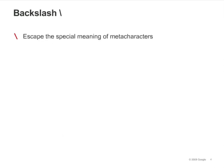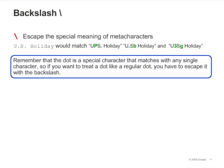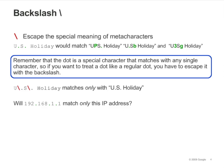Backslashes allow you to use special characters, such as the dot, as though they were literal characters. Enter the backslash immediately before each meta-character you would like to escape. "US Holiday", when written with dots after the U and the S, would match a number of unintended strings, including UPS.Holiday, U.SB.Holiday, and U3SG.Holiday. Remember that the dot is a special character that matches any single character, so if you want to treat a dot like a regular dot, you have to escape it with the backslash. You'll use backslashes a lot because dots are used so frequently in precisely the strings you are trying to match, like URLs and IP addresses.